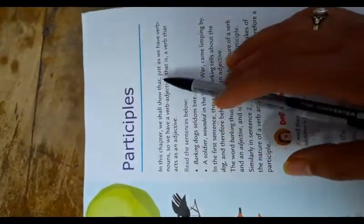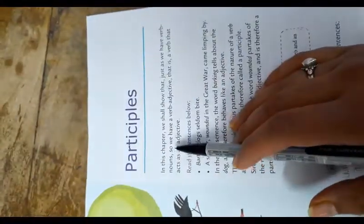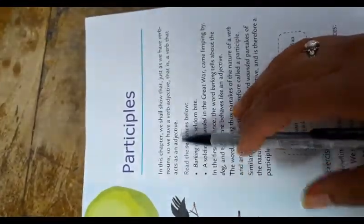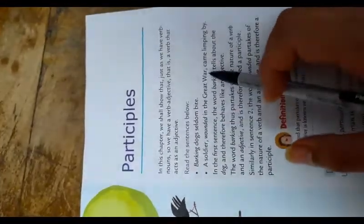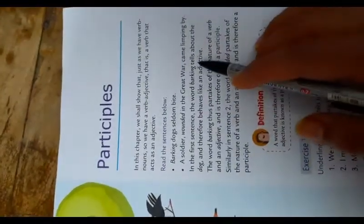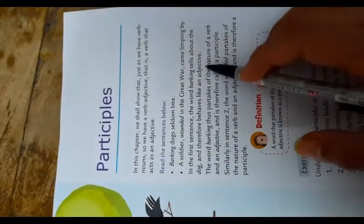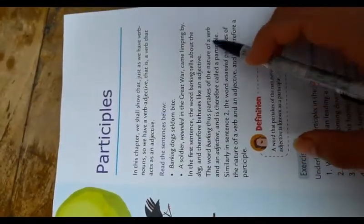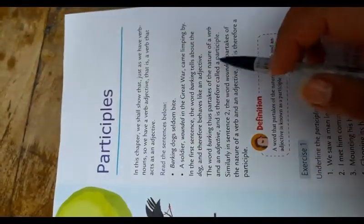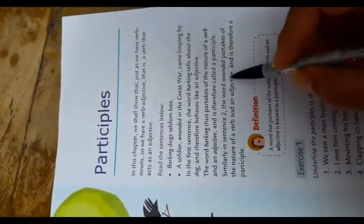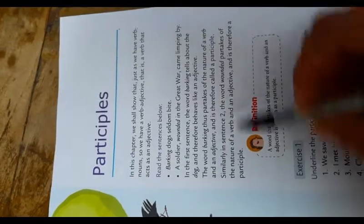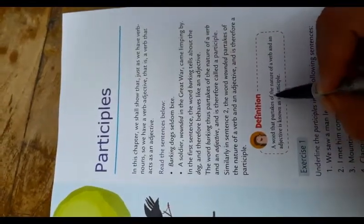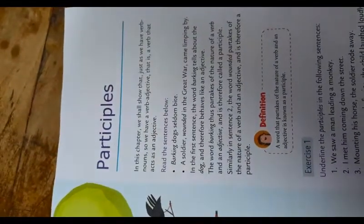Chapter 9: Participles. In this chapter, we shall show that just as we have a verb noun, so we have a verb adjective — that is, a verb that acts as an adjective. Read the sentences below: 'Barking dogs seldom bite.' 'A soldier wounded in the great war came limping by.' In the first sentence, the word 'barking' tells about the dog and therefore behaves like an adjective. 'Barking' partakes of the nature of both a verb and an adjective, and is therefore called a participle. Similarly, 'wounded' in sentence 2 is also a participle.